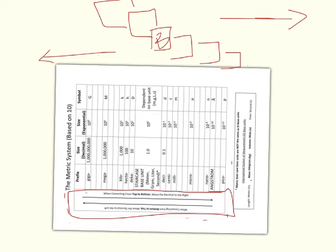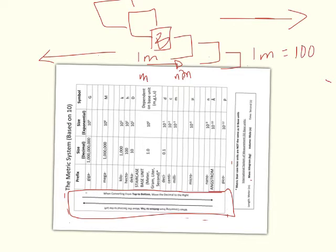Pay attention to this because some of it will appear word for word on your online assignment today. Think about things in terms of how big the unit is. Which is a bigger unit — a millimeter or a meter? The meter takes up more space. So if you're going from a meter to millimeters, millimeters are much tinier. You're going to have a lot more millimeters to take up the same space as one meter — that's why one meter equals one thousand millimeters.